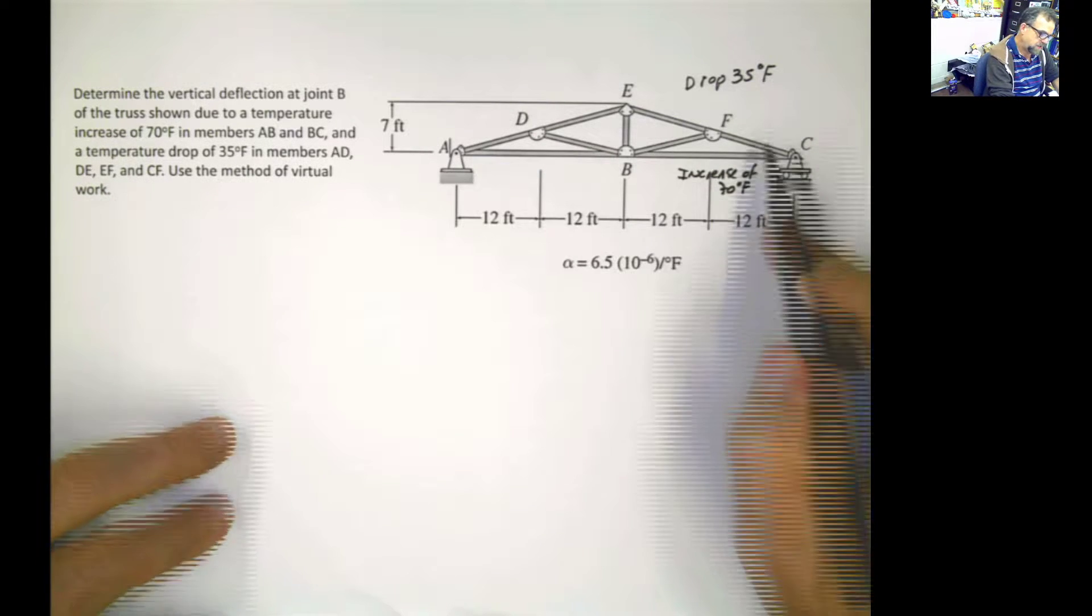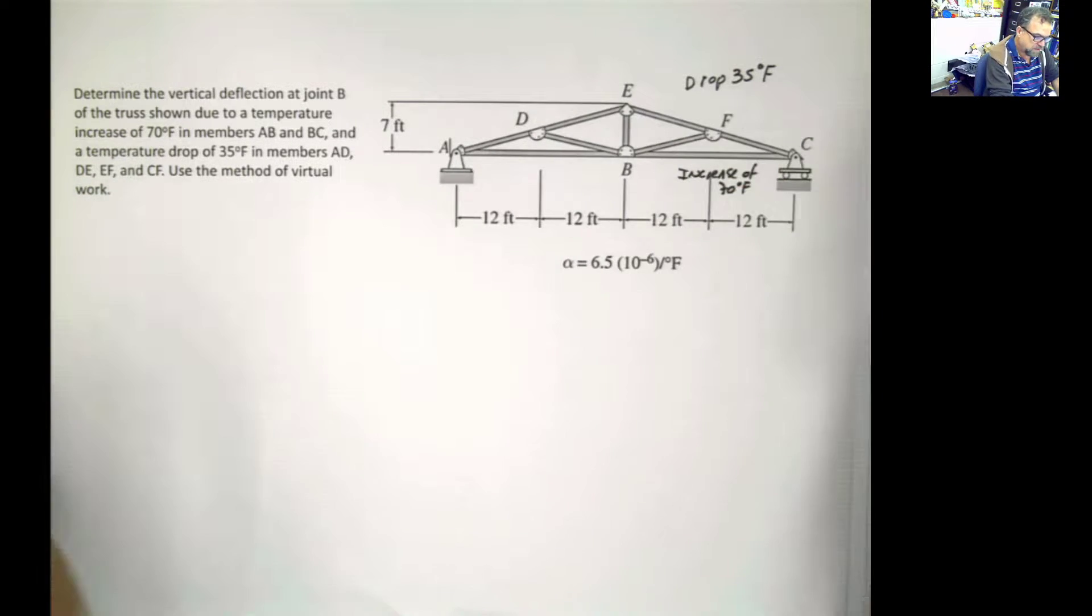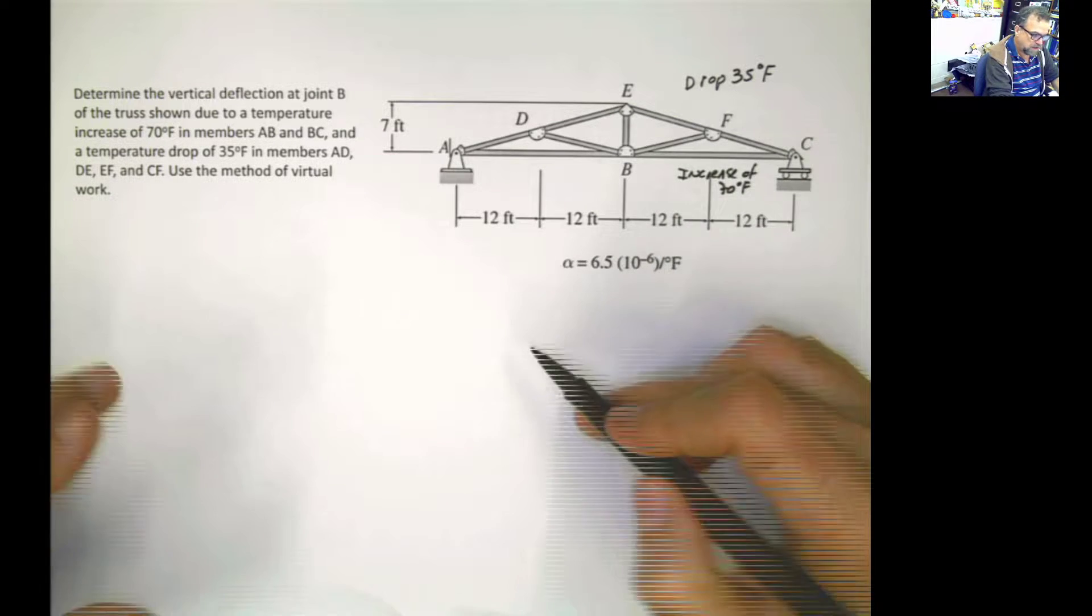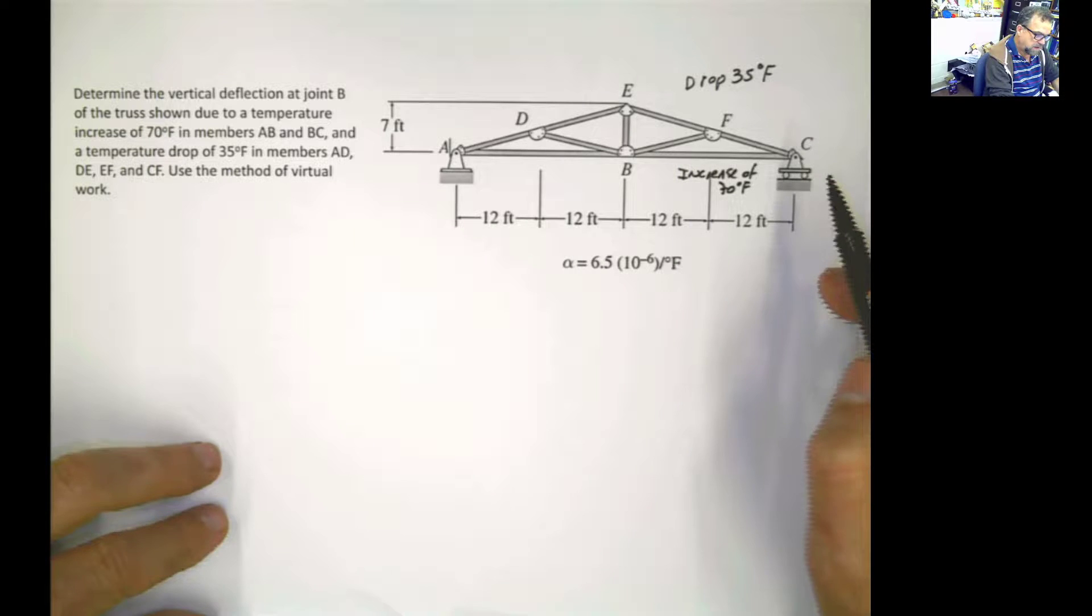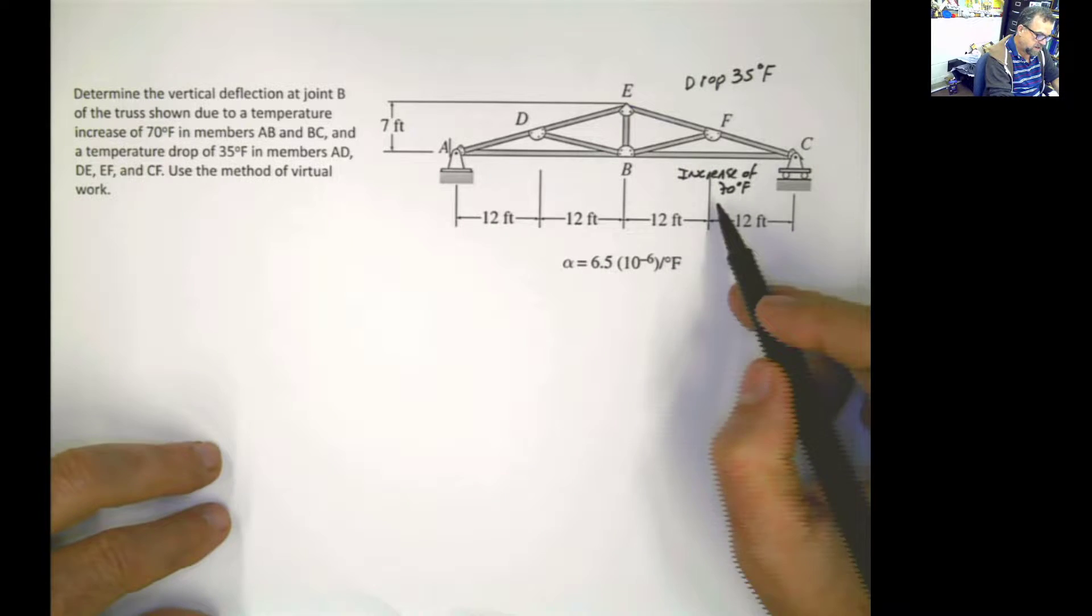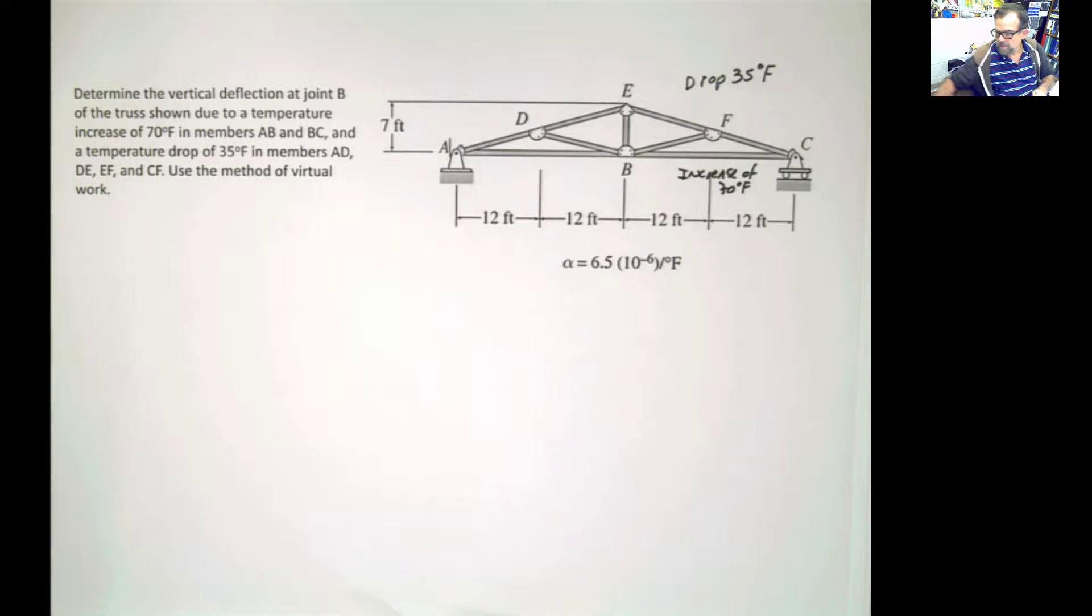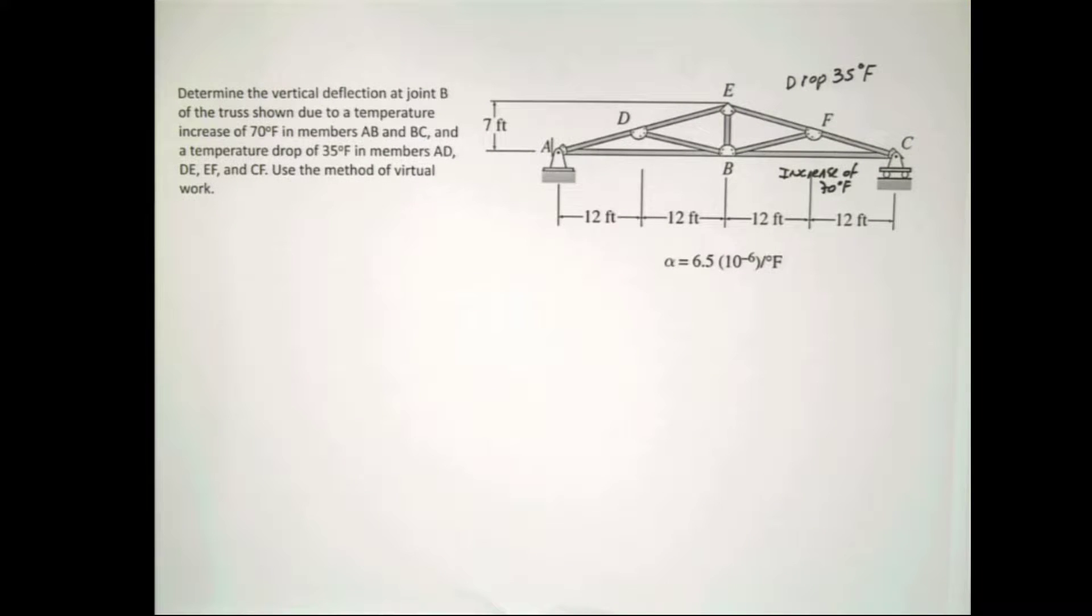So this one, the drop, yes, I can understand. You have snow, you have something, you have winter in the exterior, morning, afternoon. But the increase of 70 degrees Fahrenheit in the interior part of that, well, I don't know. Fire? I don't think so. But anyway, so let's work this problem out.